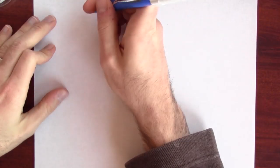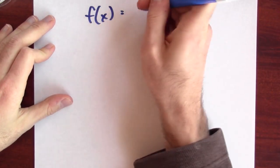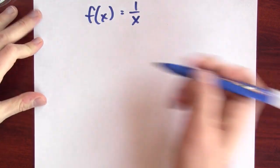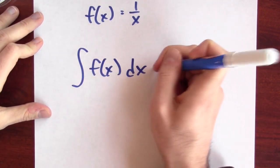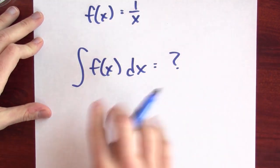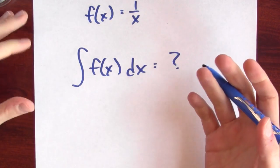I must now unveil a secret which is rarely revealed when people are first learning about antiderivatives. Consider, for example, the function f(x) = 1/x. What is the general antiderivative for this function? What's the most general thing that differentiates to 1/x?